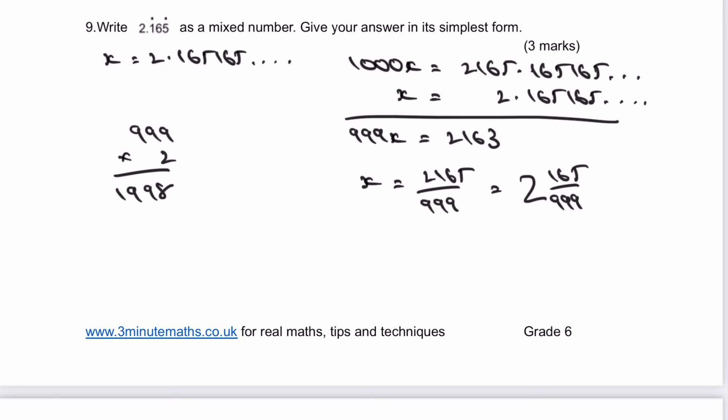Now, both of those are divisible through by three. So therefore, I get 2 and 55 over 333. And I can't actually go any further than that. And that's the final answer.